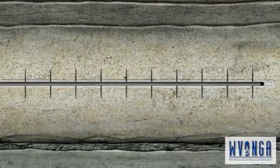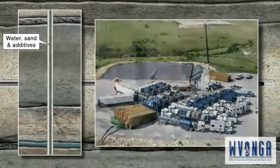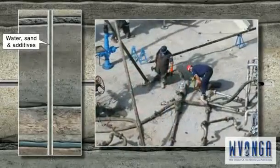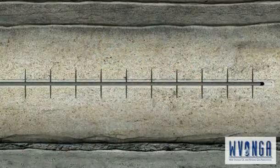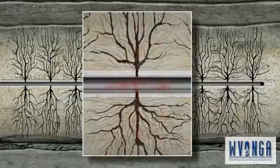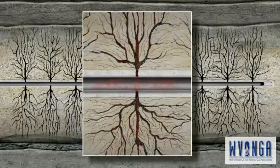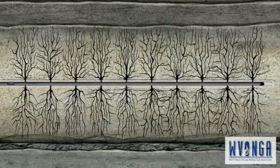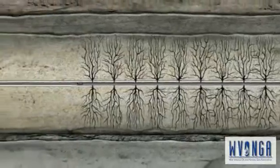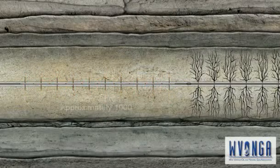Next, because the sandstone is tight, the well will have to be fracked. Known as hydraulic fracturing, this is a process where water, sand and additives are pumped into the well bore and down the casing under extremely high pressure. As the mixture is forced out through the perforations and into the surrounding rock, the pressure causes the sandstone to fracture. This creates a fairway connecting the reservoir to the well and allows the released gas to flow to the well bore. Next, a temporary plug is placed at the heel of the first stage frack, isolating the perforated and fracked section so that the second stage section of the horizontal leg can be perforated and fracked.